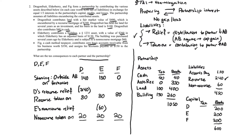Summing all items in the table: D gets $0 outside basis, E gets $170, and F gets $100. If any number were negative, we would have a gain equal to that amount, because we cannot have negative basis. However, none of the numbers are negative — therefore, no gain is recognized by D, E, or F, and no gain to the partnership. The resulting outside bases are $0 for D, $170 for E, and $100 for F.